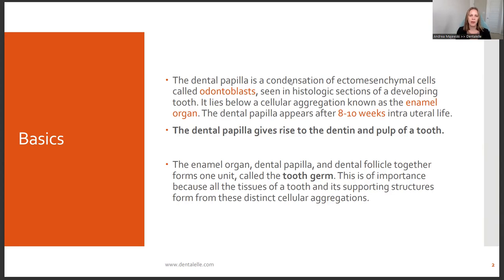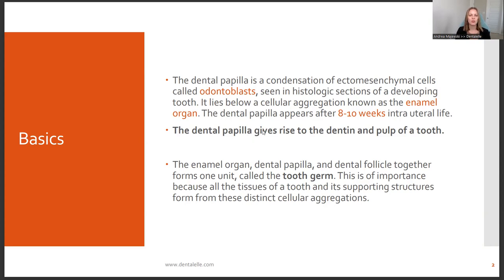For example, when talking about the odontoblasts, the ameloblasts, and the different cells, the ecto-mesenchymal cells are the odontoblasts, and that starts with the dental papilla. The dental papilla lies below something called the enamel organ. The dental papilla appears after eight to ten weeks, and it gives rise to the dentin and the pulp of a tooth.